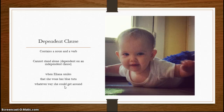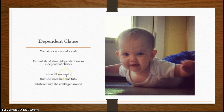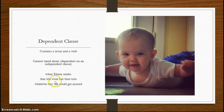The dependent clause is like the little kid — like sweet little Eliana. A dependent clause contains a noun and a verb still — that's what makes them kind of confusing — but it can't stand alone. It has to depend on an independent clause. For instance, 'when Eliana smiles' — I have a subject, Eliana, and a verb, smiles, but my thought's not complete. It needs: 'when Eliana smiles, Mrs. Montgomery smiles too.' That makes it a complete thought and gives it an independent clause to lean on. Or something like 'that she wore her blue tutu' — noun, verb — and yet not a complete thought. It can't stand alone.